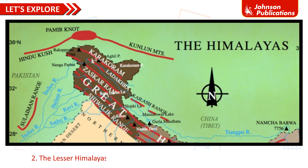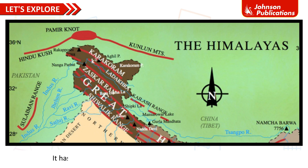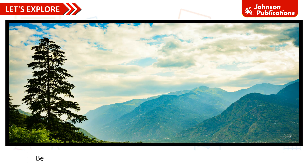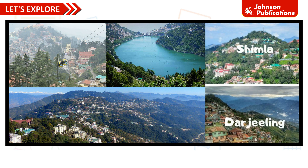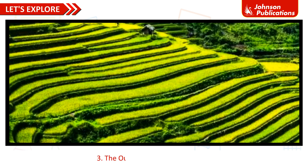The Lesser Himalayas, or Himachal, lies to the south of Himadri. It has dense forests of pine and deodar on the mountain slopes. Beautiful hill stations like Darjeeling, Shimla, Mussoorie, Nainital, and Kullu are situated in this range.